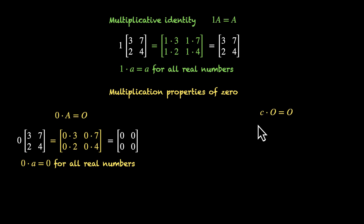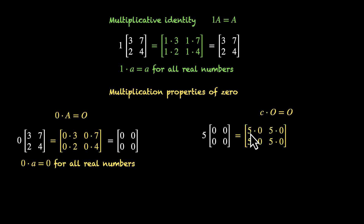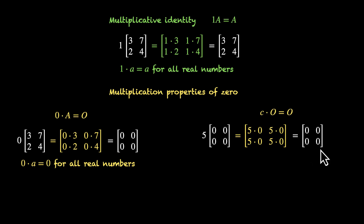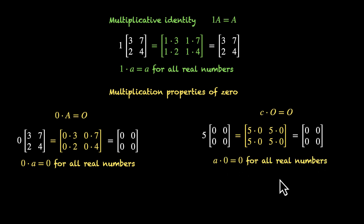In the other case, we have a real number times a zero matrix. Let's take the number 5: 5 times [0, 0, 0, 0] gives 5 times 0, 5 times 0, 5 times 0, and 5 times 0. So all elements stay zero and this becomes [0, 0, 0, 0] — again the zero matrix. This is true because it works for all real numbers. So these were the properties for scalar multiplication.